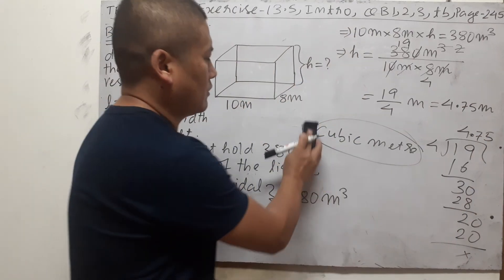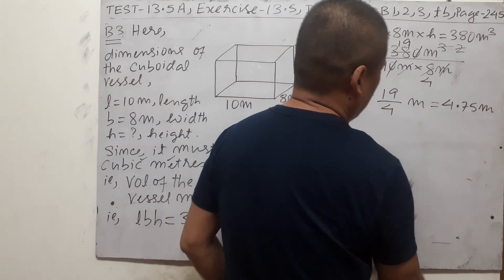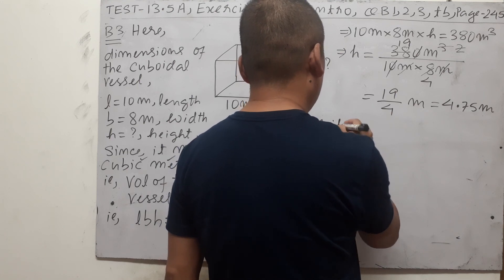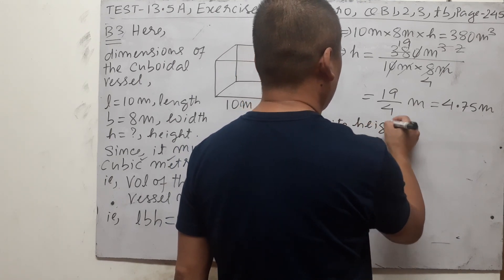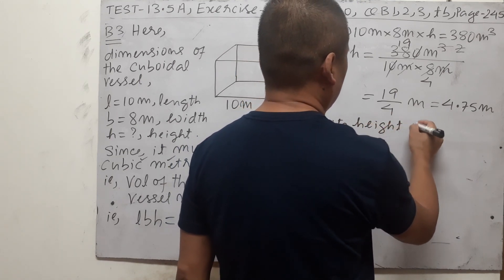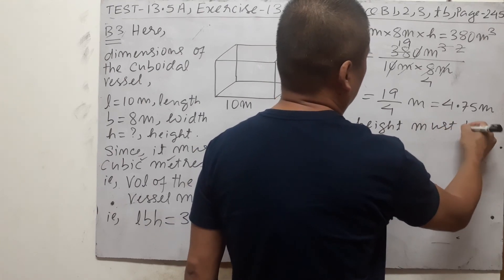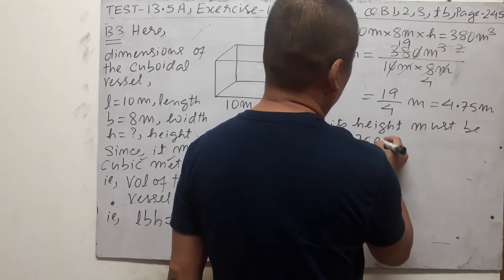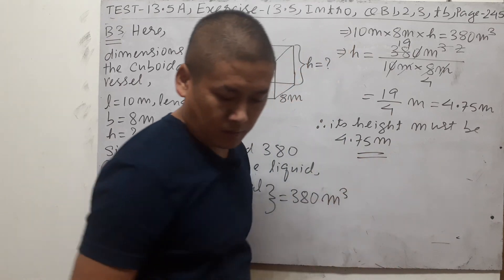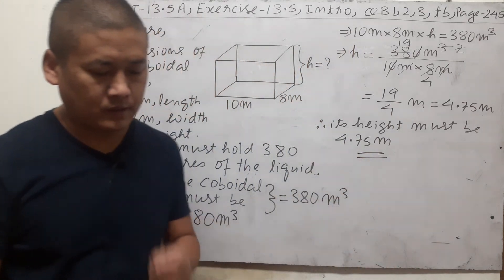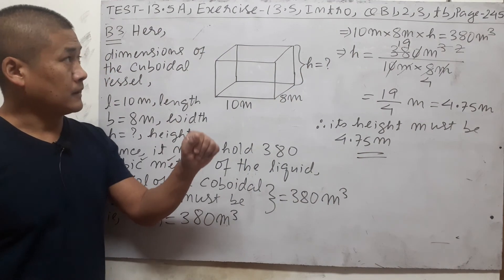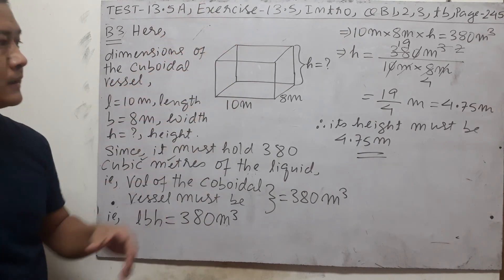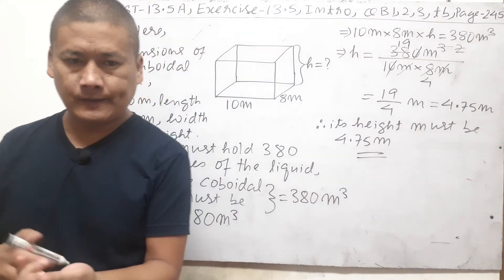So the height must be 4.75 meters — same as the textbook answer. That completes Exercise 13.5A. I hope you got it all right.